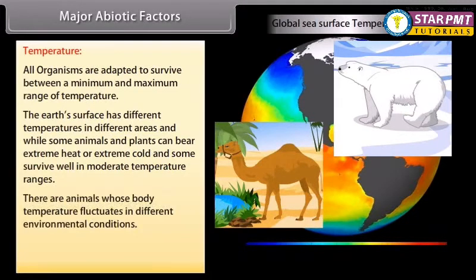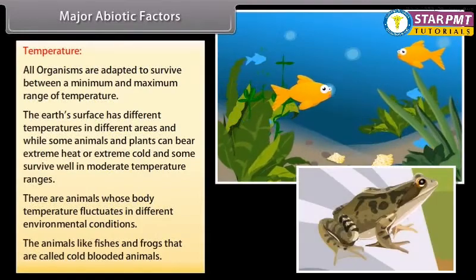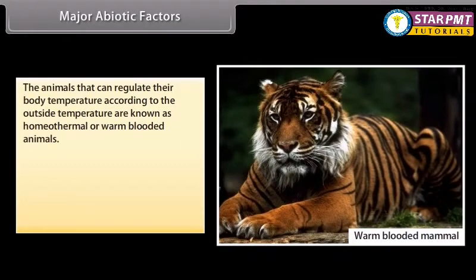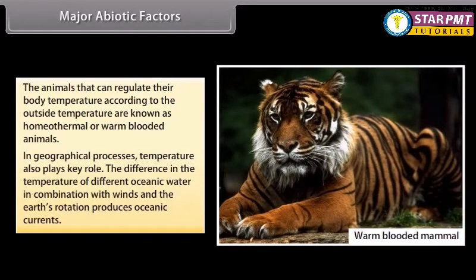There are animals whose body temperature fluctuates with different environmental conditions — animals like fishes and frogs that are cold-blooded. Animals that can regulate their body temperature according to the outside temperature are known as homeothermal or warm-blooded animals. Temperature also plays a key role in geographical processes. The difference in temperature of different oceanic waters in combination with winds and the earth's rotation produces oceanic currents.